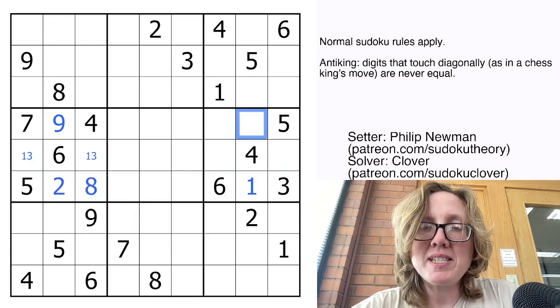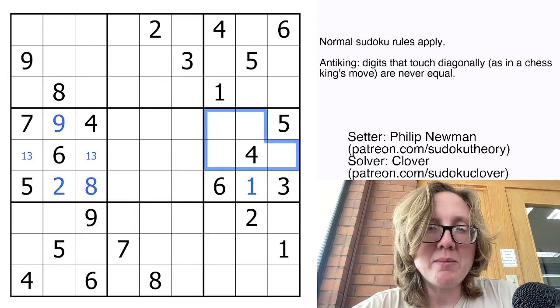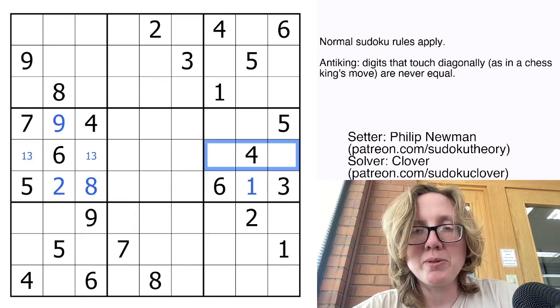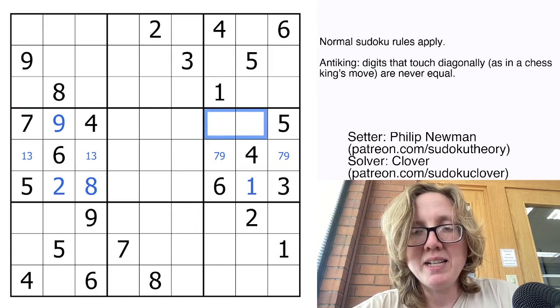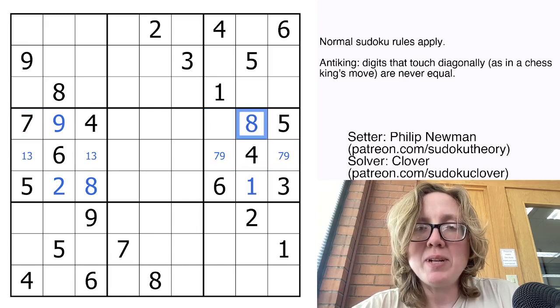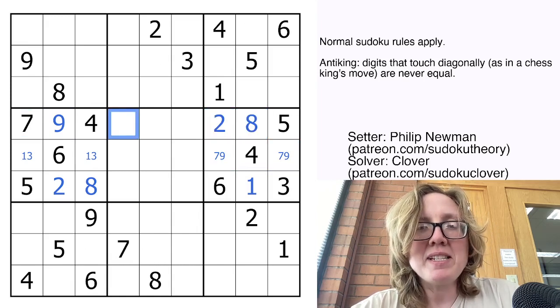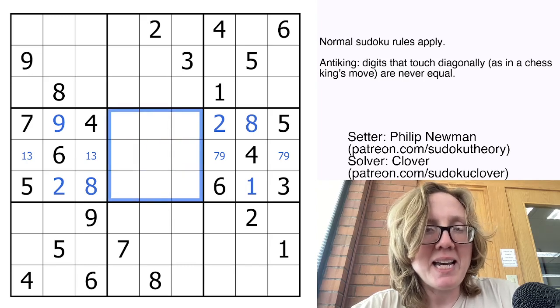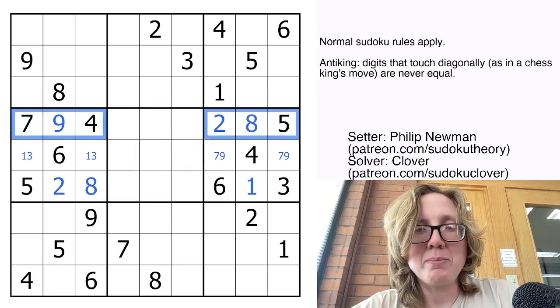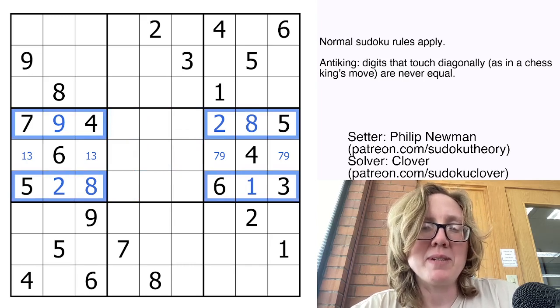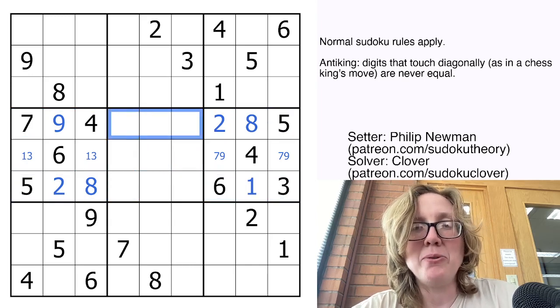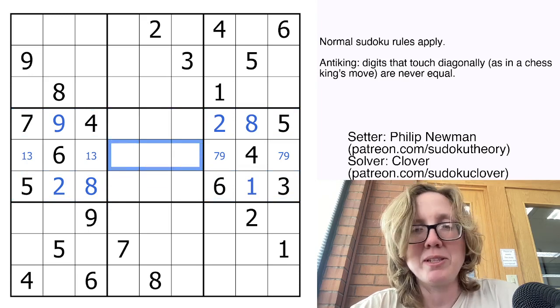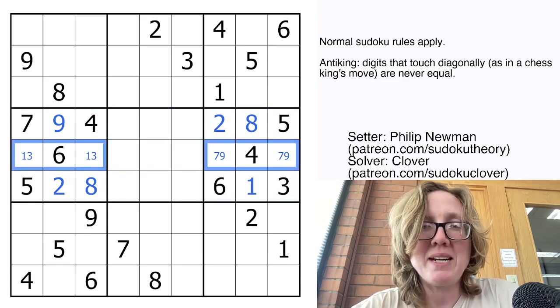Similarly over here we need to place 7 and 9 in region 6 somewhere. They can't go in these two cells, so we're going to put them here. That's a 7-9 pair. And then we're going to place 2 and 8 there. The reason I'm moving to this region, even though it's completely empty, is that's what the flow of the puzzle is directing me towards. I now have only three remaining digits in each of these rows because these are both pairs.